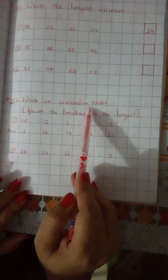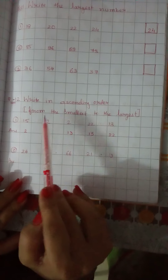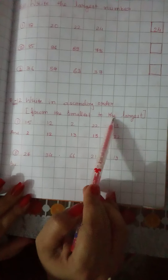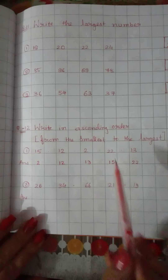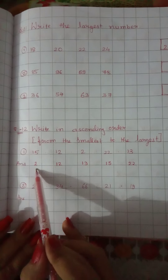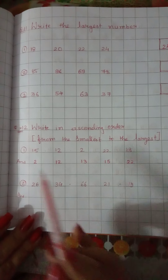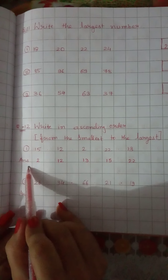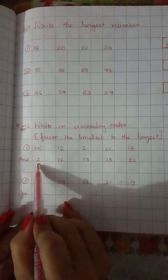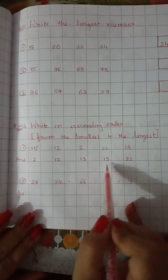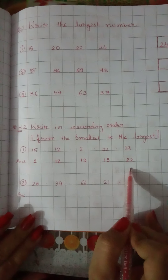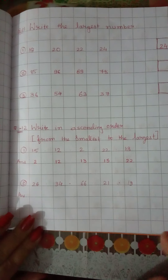Question number 12: write in ascending order. Ascending order means from the smallest to the largest. So first we write the small number, then go to the largest. The answer is: 2, 12, 13, 15, and 22. Other examples, do by yourself.